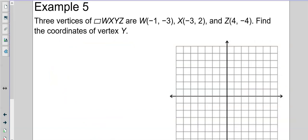All right. Three vertices of WXYZ are W at (-1, -3). So, left 1, down 1, 2, 3. X at (-3, 2). So, left 1, 2, 3, up 2. Z at (4, -4). Right 4, and down 1, 2, 3, 4. So, we have W, X, and Z. We're trying to find Y. So, if I draw this. If this is a parallelogram, then they have opposite slopes of the same.